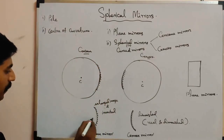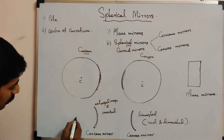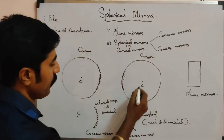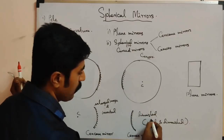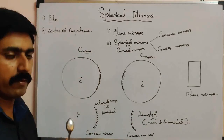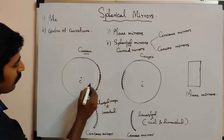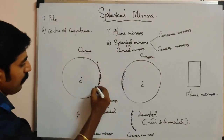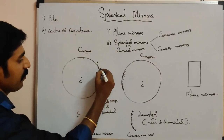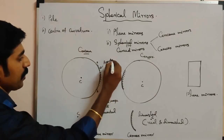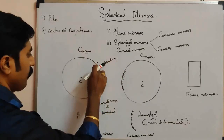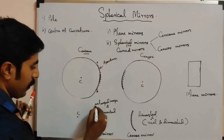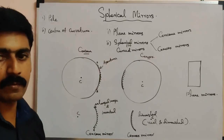The center of curvature is a point. The distance between point A and point B — from top to bottom of the reflecting surface of a mirror — is called the aperture. The aperture should be less than the radius of curvature.